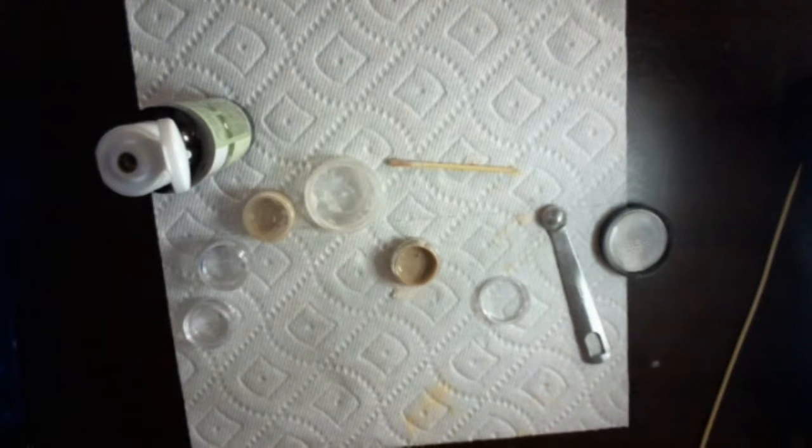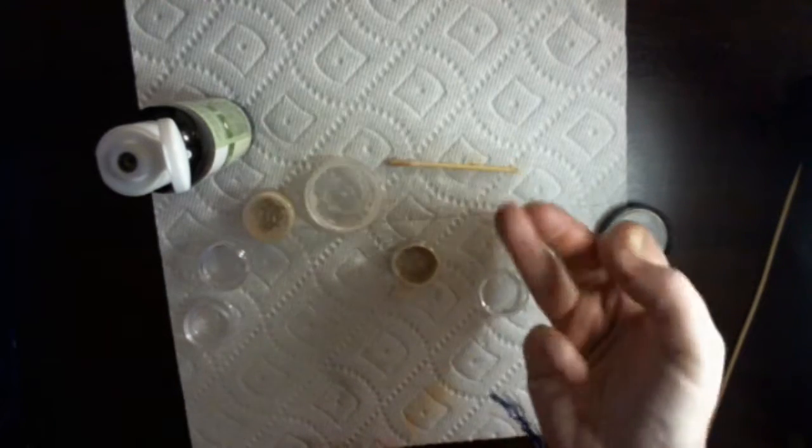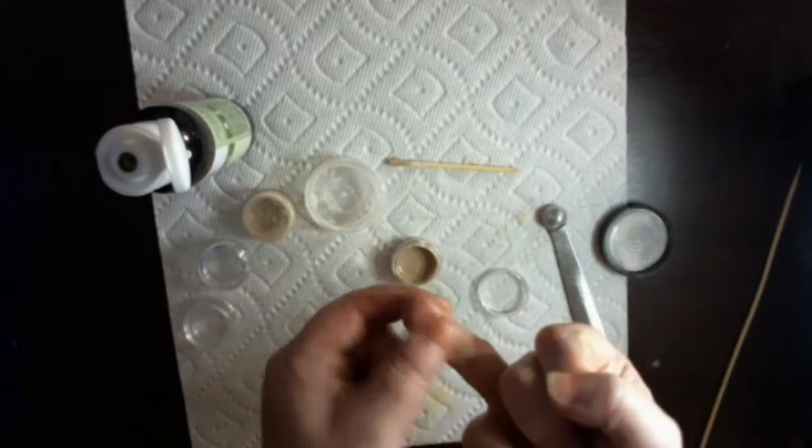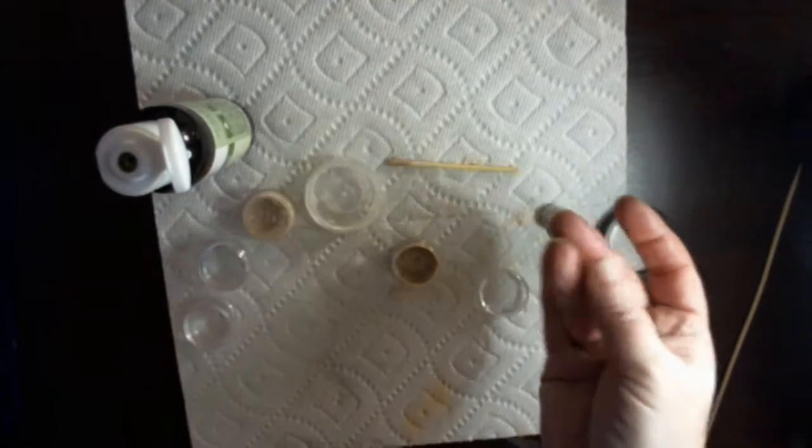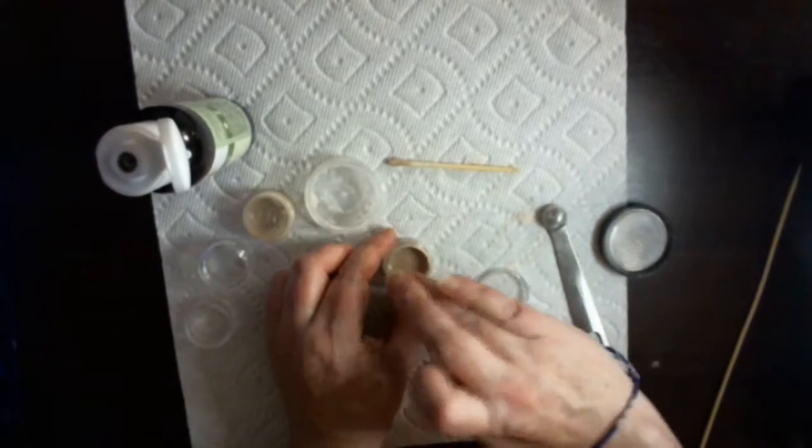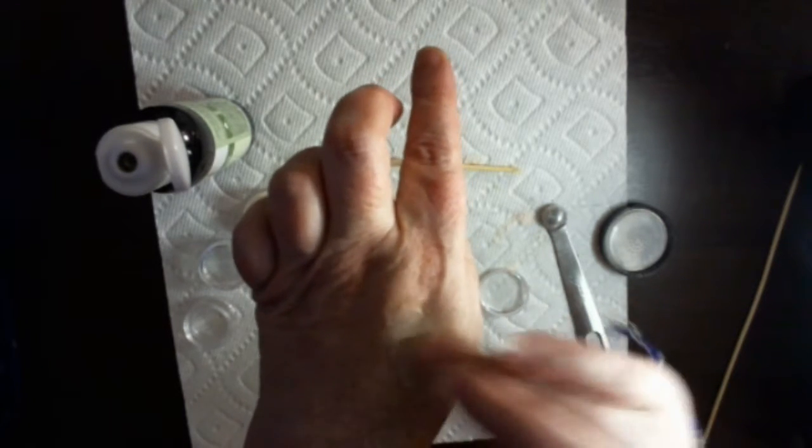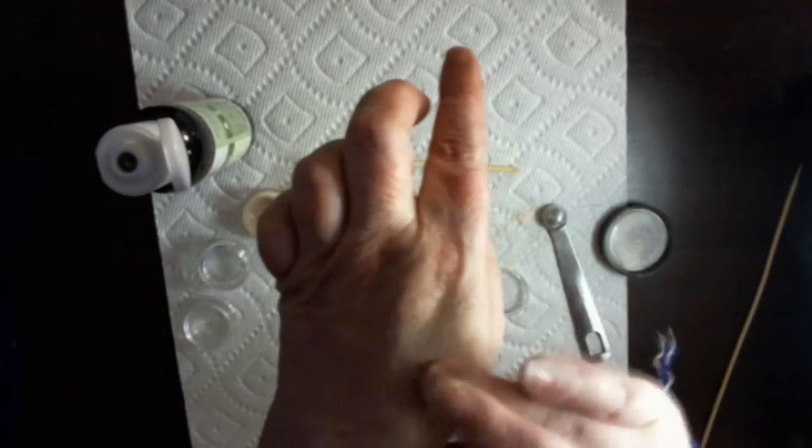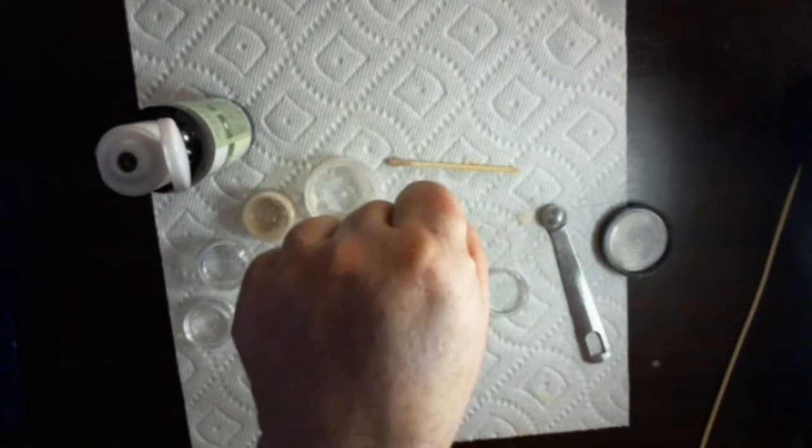When you're ready to put it on, you can take, if you're doing your under eyes, it's always a good idea to take your ring finger if you're working with your under eyes because it's the weakest finger and it pulls on the tissues under your eyes the least amount. So you're gonna take a little bit and you can just put it on there, and it's gonna be a little bit lighter.